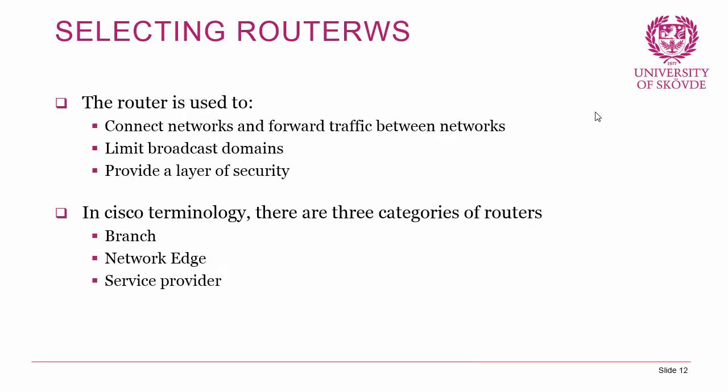A router is used to connect networks, forward traffic between networks, limit broadcast domains, and provide a layer of security since routers can commonly act as firewalls. In Cisco terminology, there are three categories of routers: branch, network engine, and service provider, with different functionality and performance. When selecting routers, consider how many interfaces you need, VPN tunnel handling, firewalling requirements, and which routing protocols you're going to run.